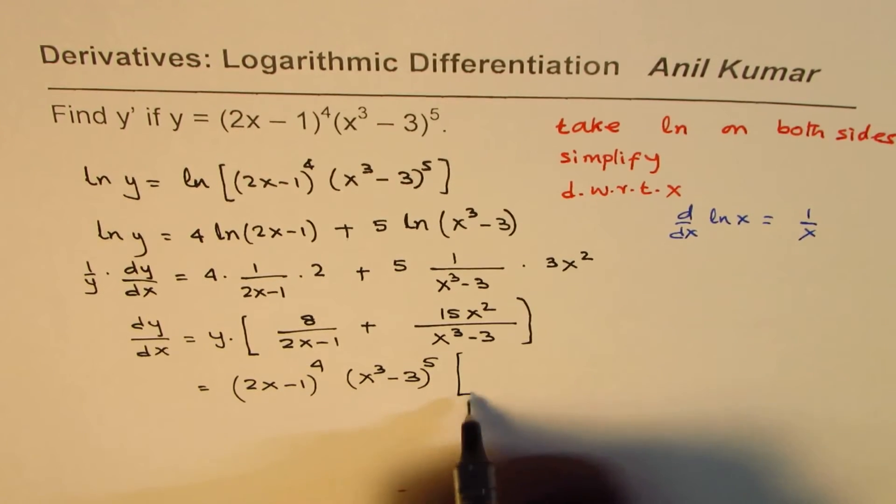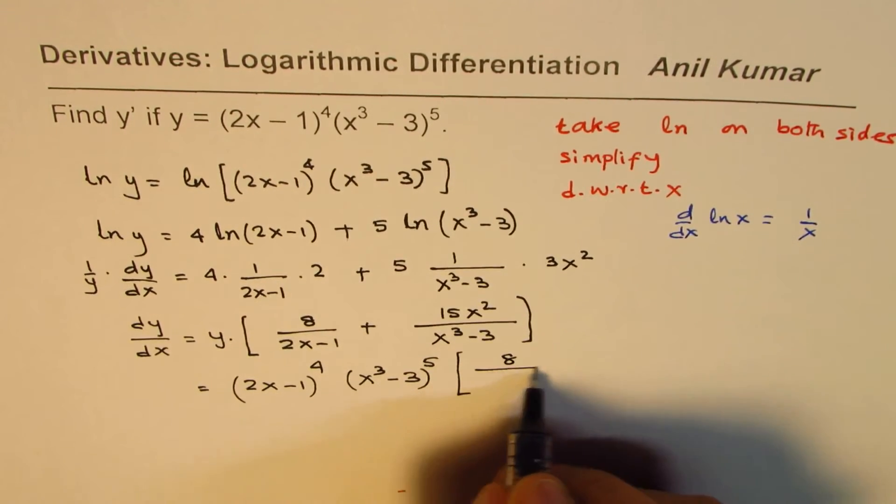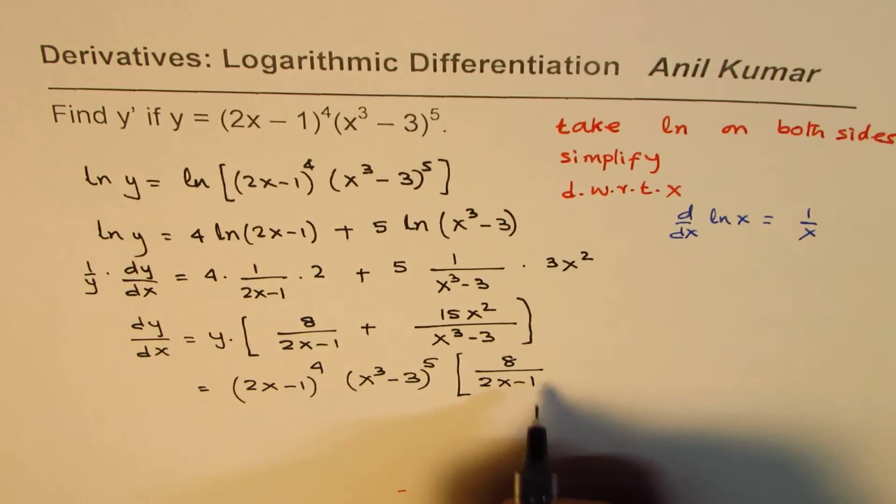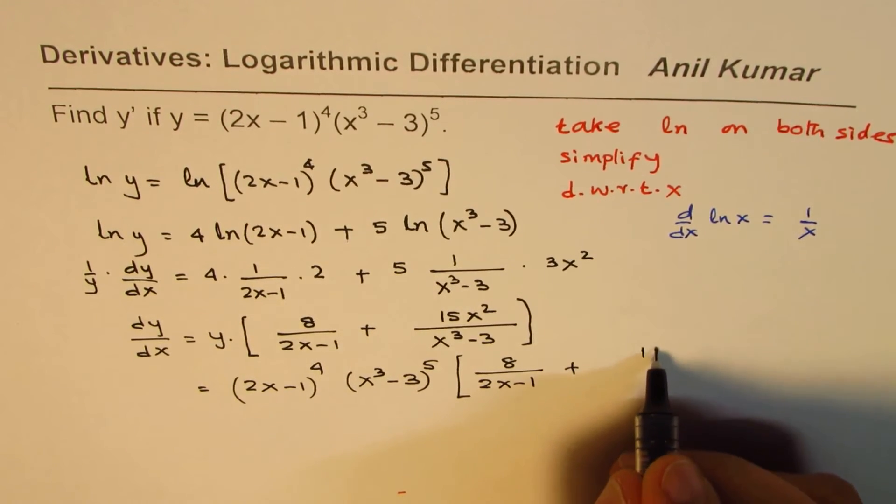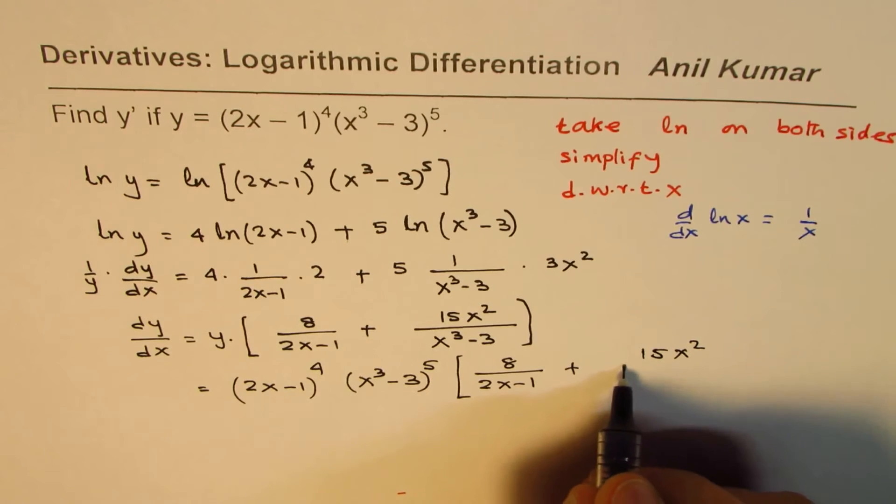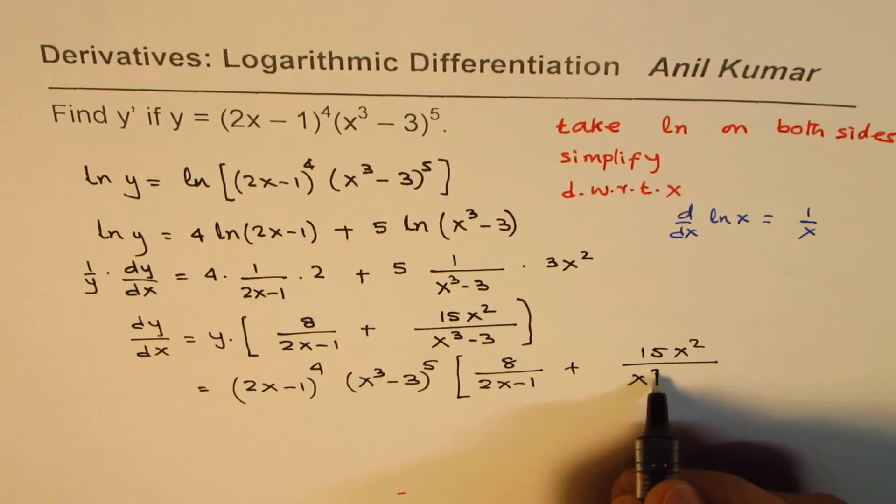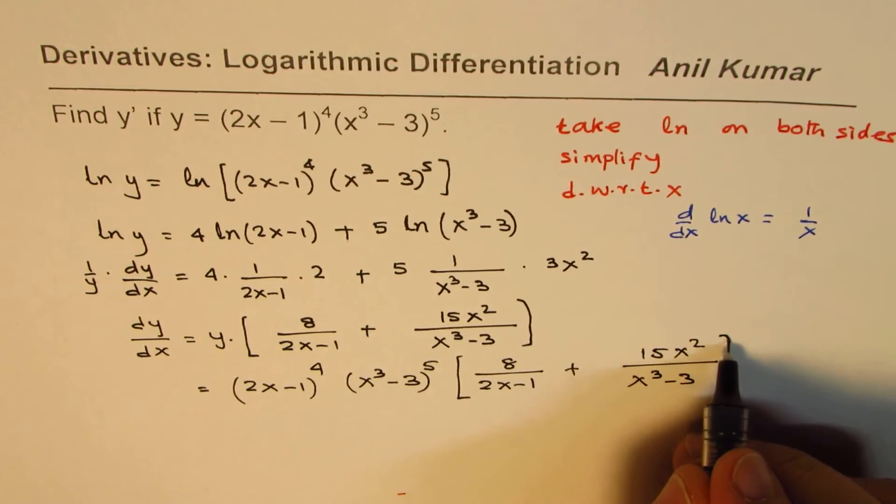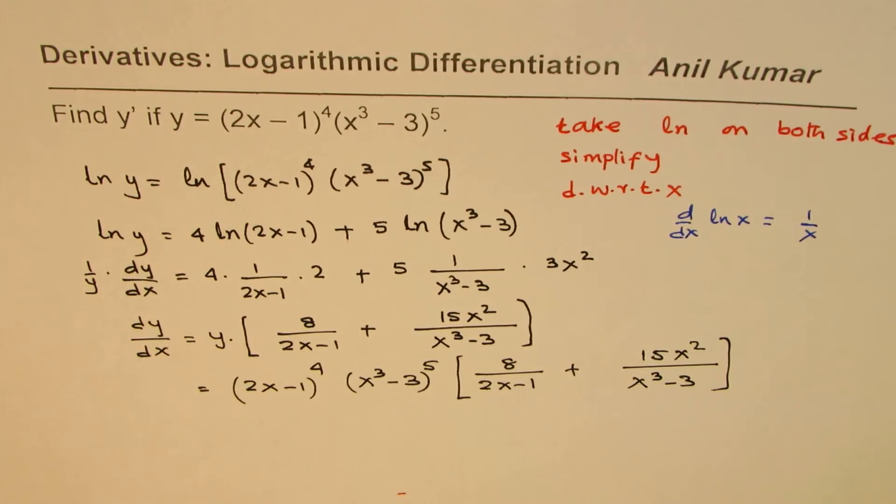And within the brackets, we get 8/(2x - 1) plus 15x^2/(x^3 - 3). Right? So that becomes your answer. So that is how you can actually find derivative of some functions using logarithms on both sides.